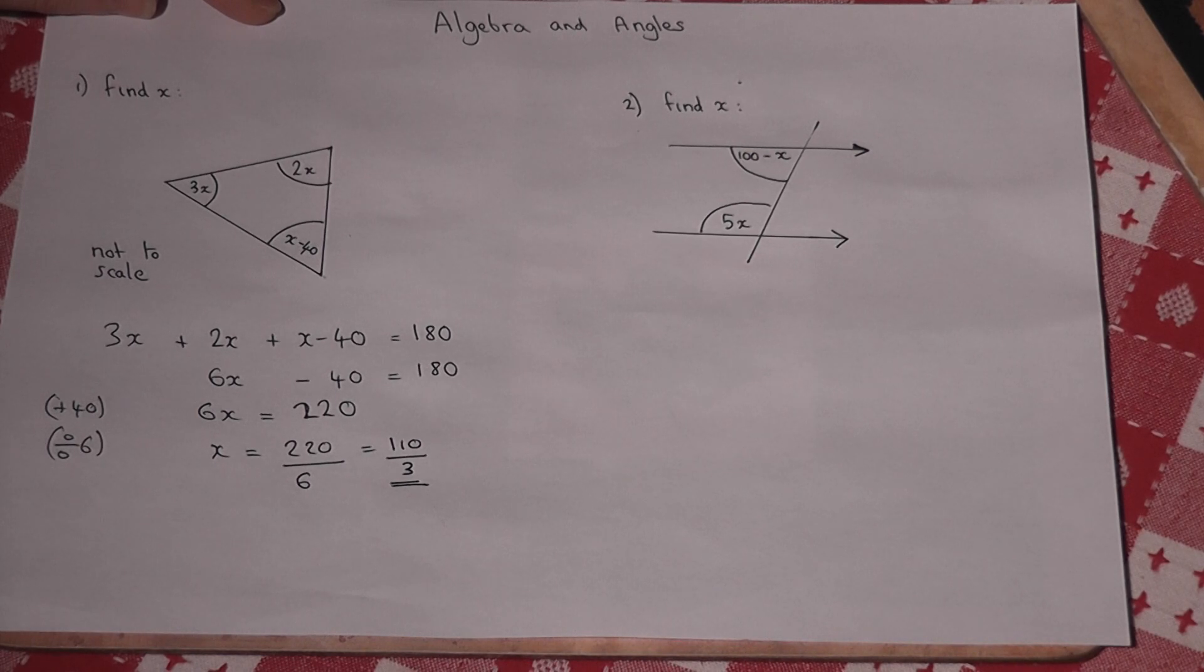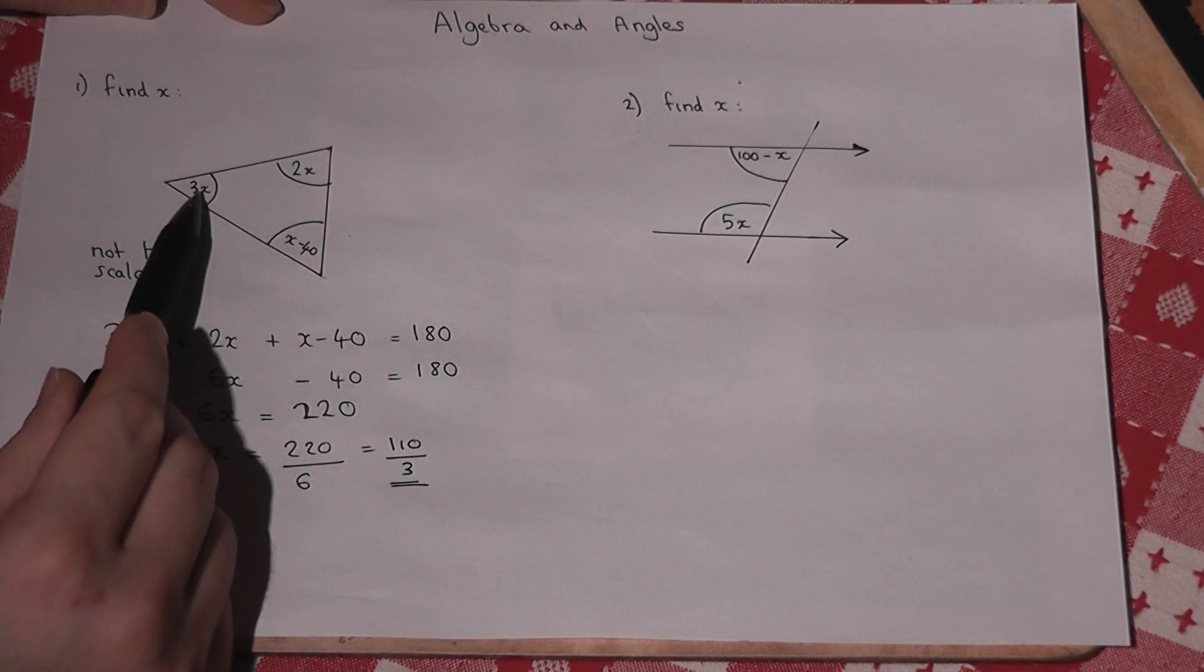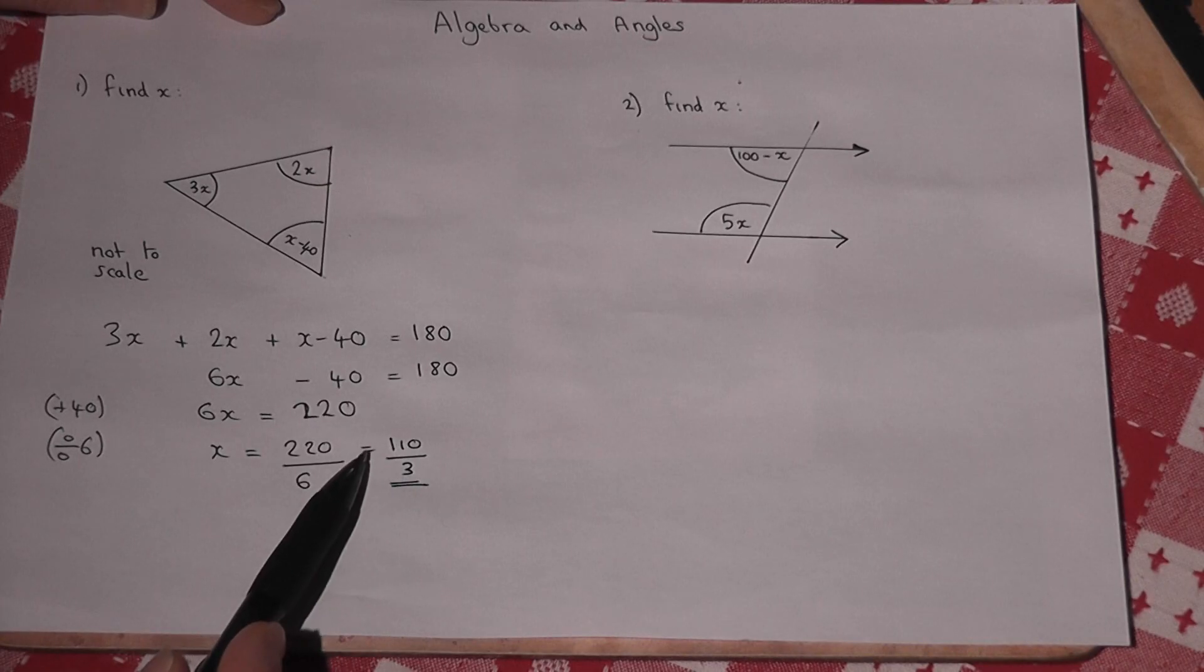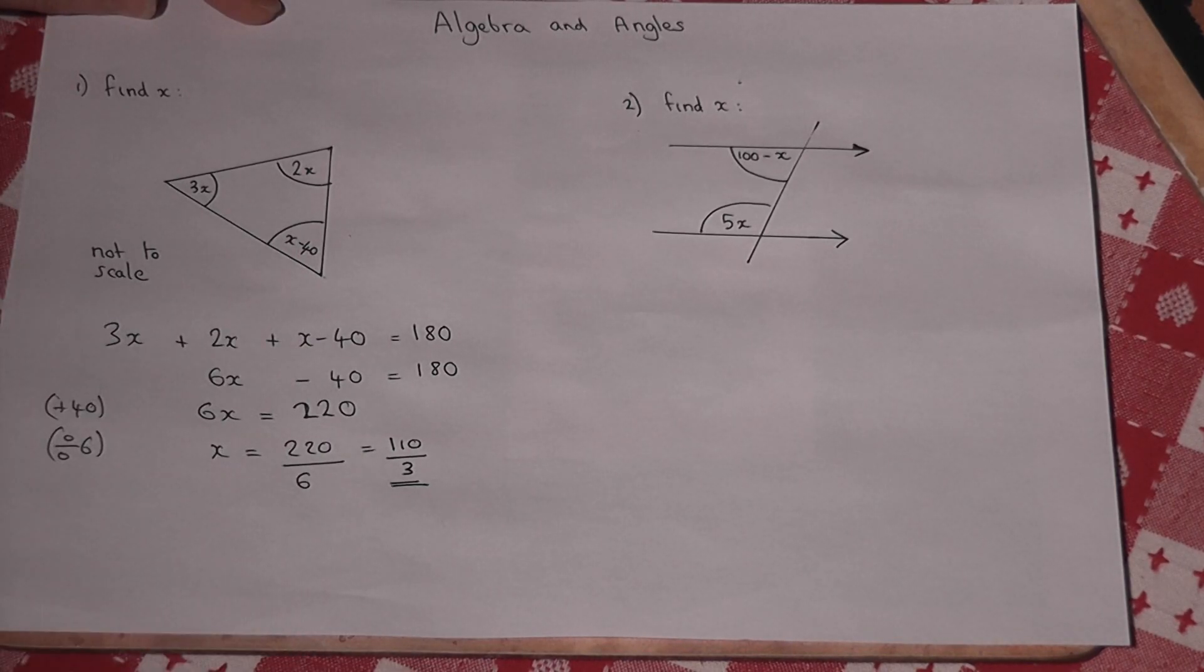And of course, when we know x, we can find each of the angles. For example, this angle here is 3 times x. This angle here is 2 times x. And this is x take away 40.